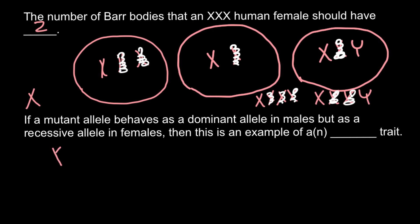As you know, the genotype of the female is XX and the genotype of the male is XY. Now imagine that we have a recessive allele that causes a recessive genetic disorder. Consider that the female genotype would be one normal X chromosome and one X chromosome with the recessive allele on it. The phenotype of this female would be normal because she has one normal X chromosome with the normal allele on it.